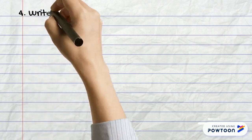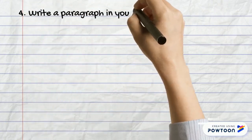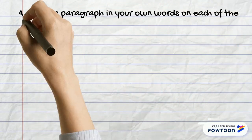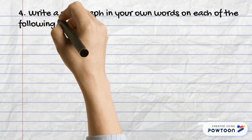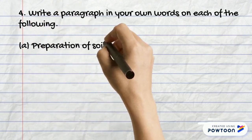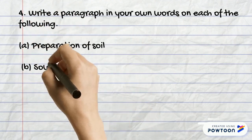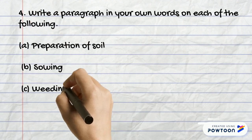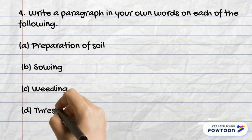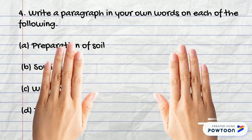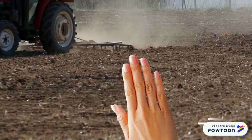Let's start with question number four. Write a paragraph in your own words on each of the following: the first one is preparation of soil, second is sowing, third is weeding, and fourth is threshing.